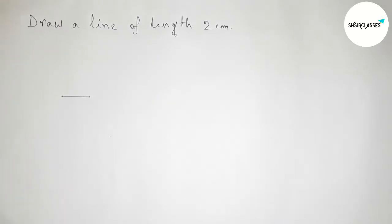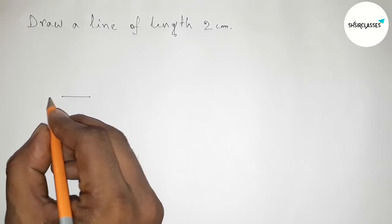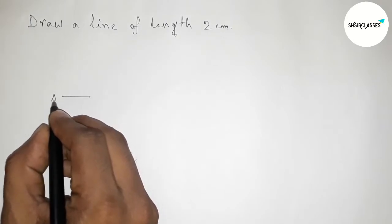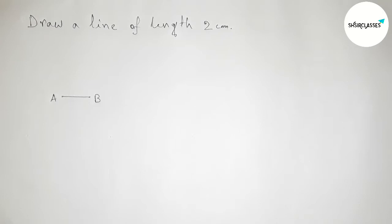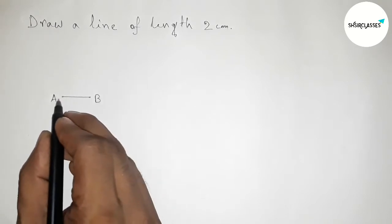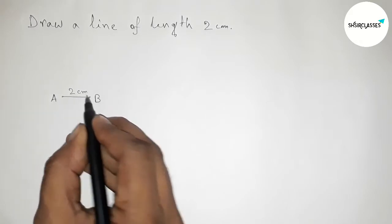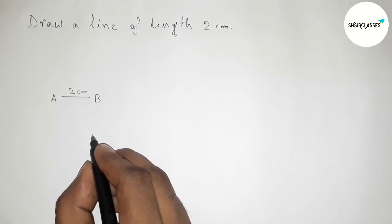So this is 2 centimeter line. Now taking here a point. Here I am going to use pen to mark the point, so taking point A and B. AB equals to 2 centimeter, so therefore the line AB...